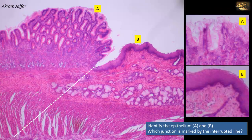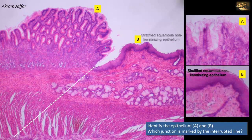Identify the epithelium A and B, and which junction is marked by the interrupted line? Epithelium B is a stratified squamous epithelium, non-keratinized. It consists of multiple layers of cells, so it is stratified; the most superficial cells are squamous. This type of epithelium in the gut is located in the oral cavity, pharynx, esophagus, and anal canal. It is a protective epithelium.